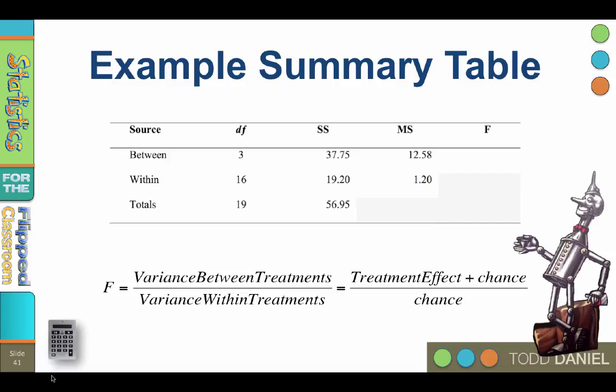And so now we are ready to calculate the f-ratio. Remember the f-ratio is the variance between divided by the variance within. The variance term is the mean square.